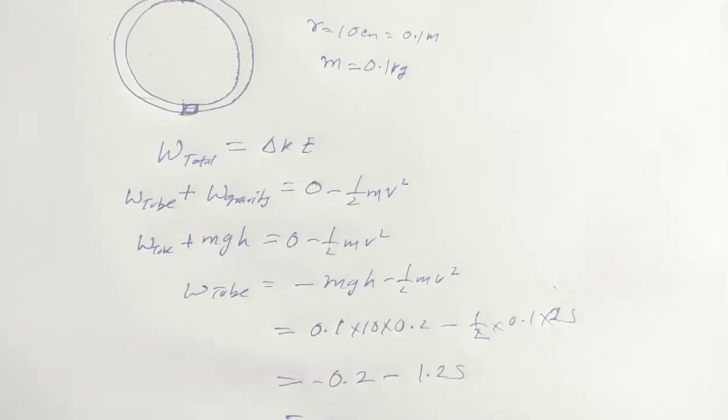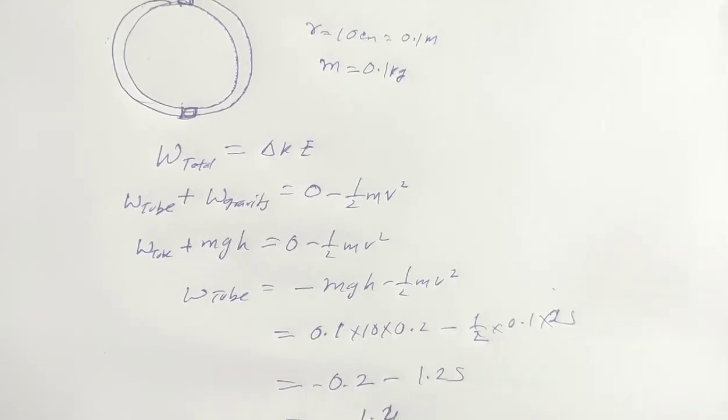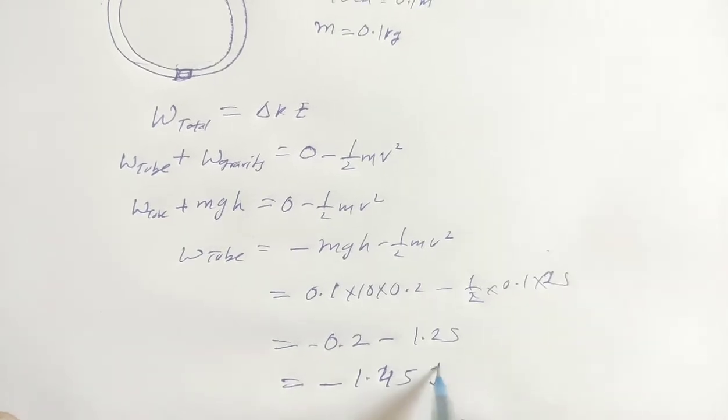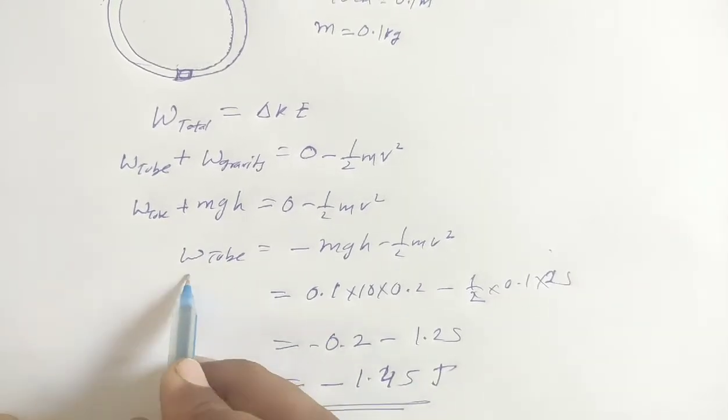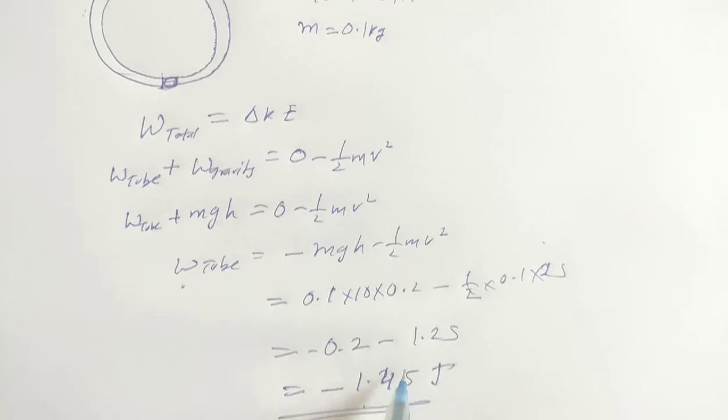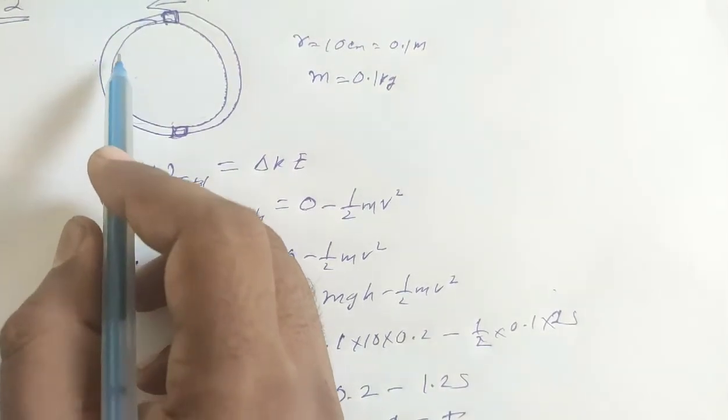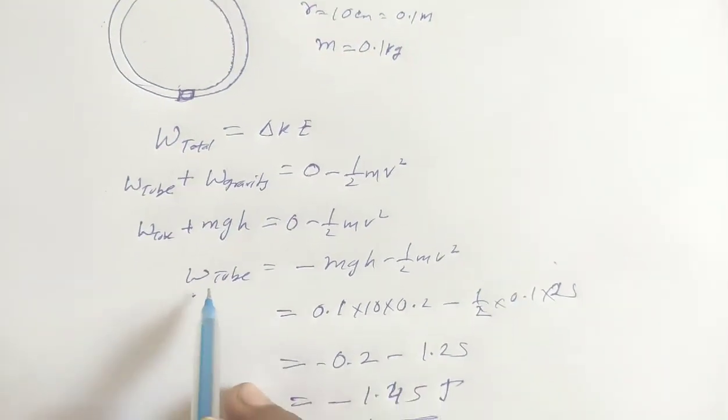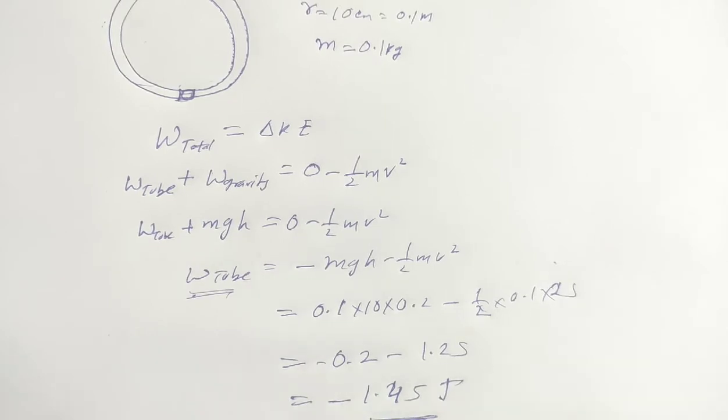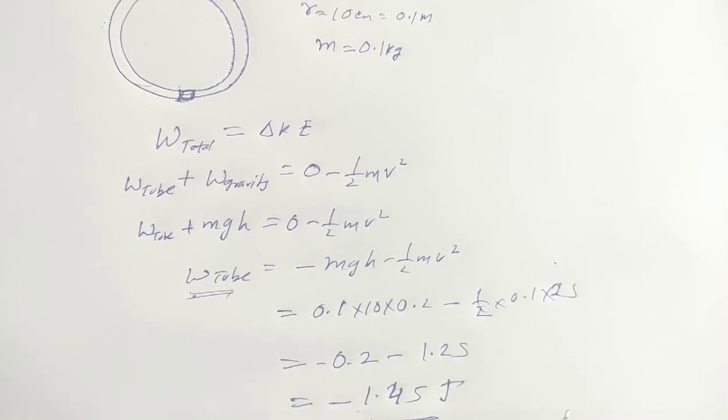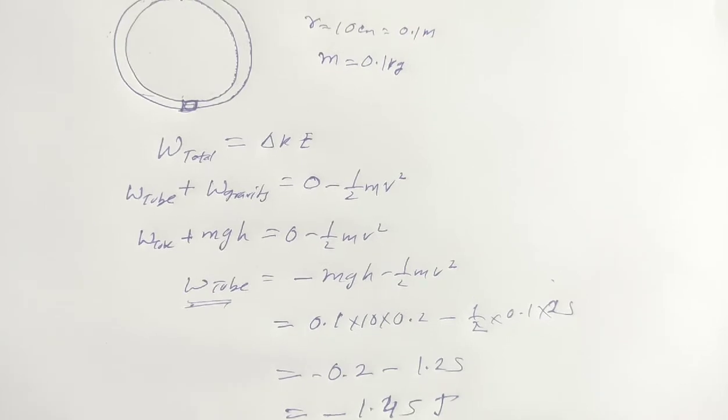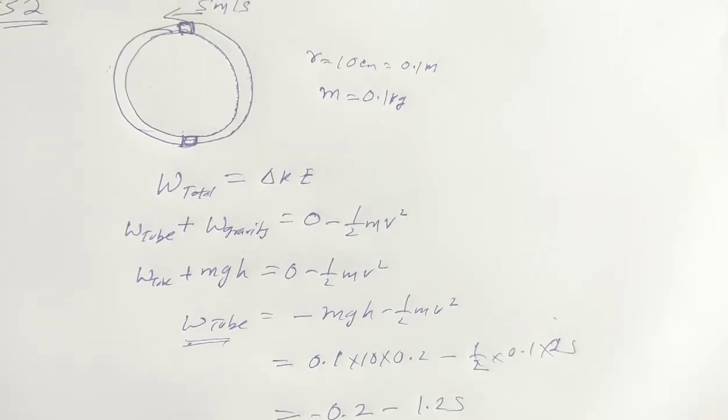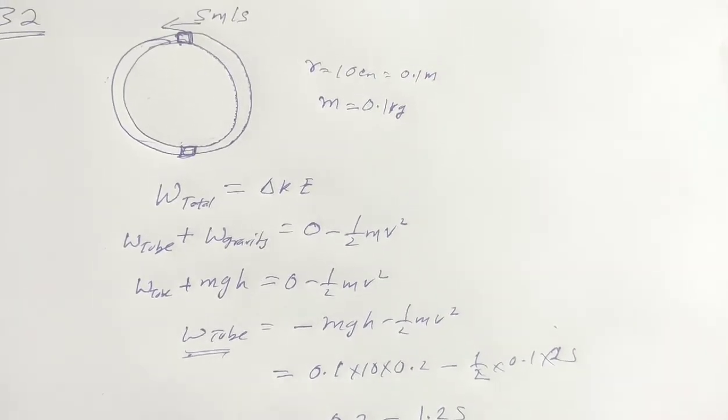The total work done by the tube comes out to be the product of force and displacement due to friction. So work done by tube is minus 1.45 joule. If you have any questions about this video solution, subscribe to the channel and comment the question number or chapter number.